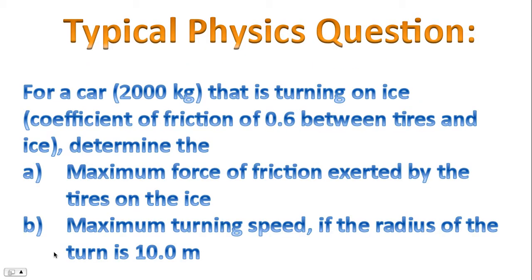Here's a standard physics question. For a car of 2000 kg that is turning on ice with a coefficient of friction of 0.6 between tires and ice, determine: A) the maximum force of friction exerted by the tires on the ice, and B) the maximum turning speed if the radius of the turn is 10 meters.